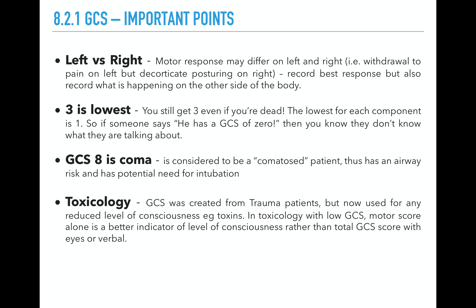Regarding toxicology: GCS was created for trauma patients in Glasgow, but now we use it for any patient with a reduced level of consciousness, including patients who've taken a drug overdose. With drug overdose patients, their eye and verbal scores can be lower than expected, giving a GCS skewed to a lower result. So using the motor score alone in patients with drug overdoses is a lot more useful in determining their level of consciousness.